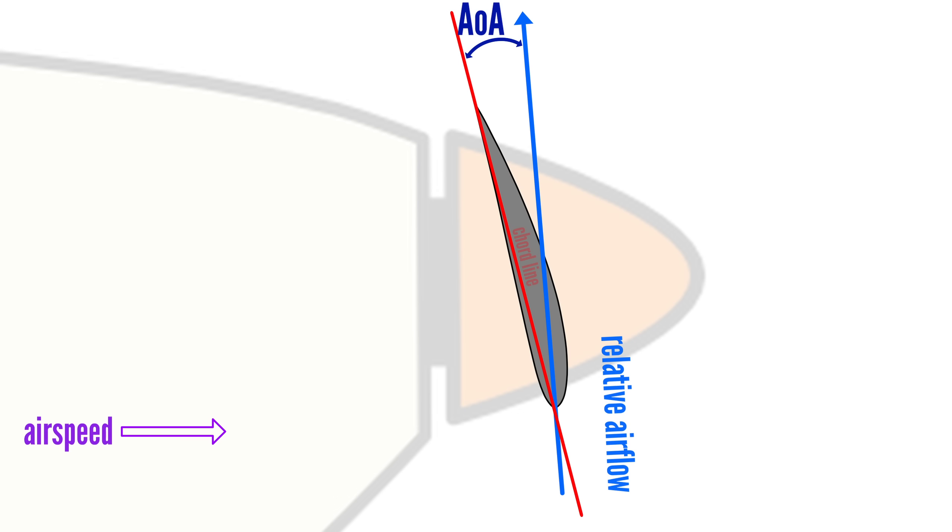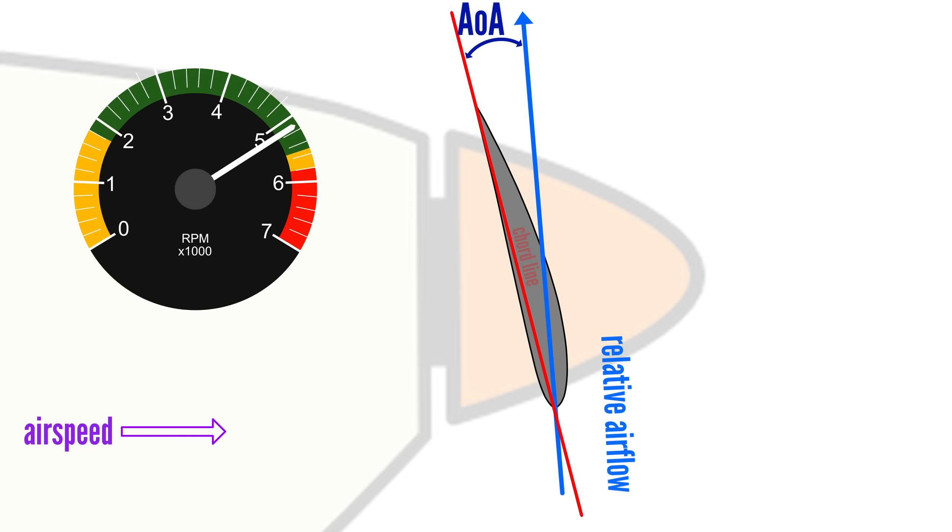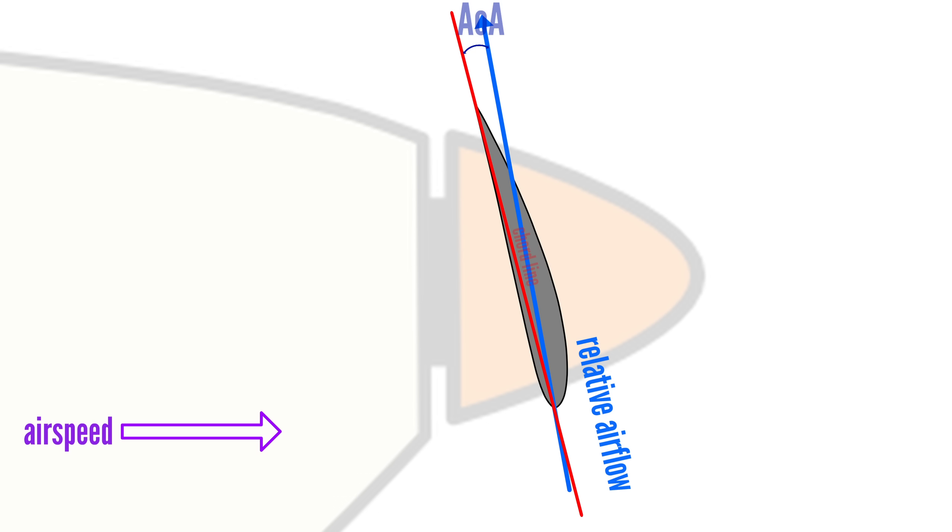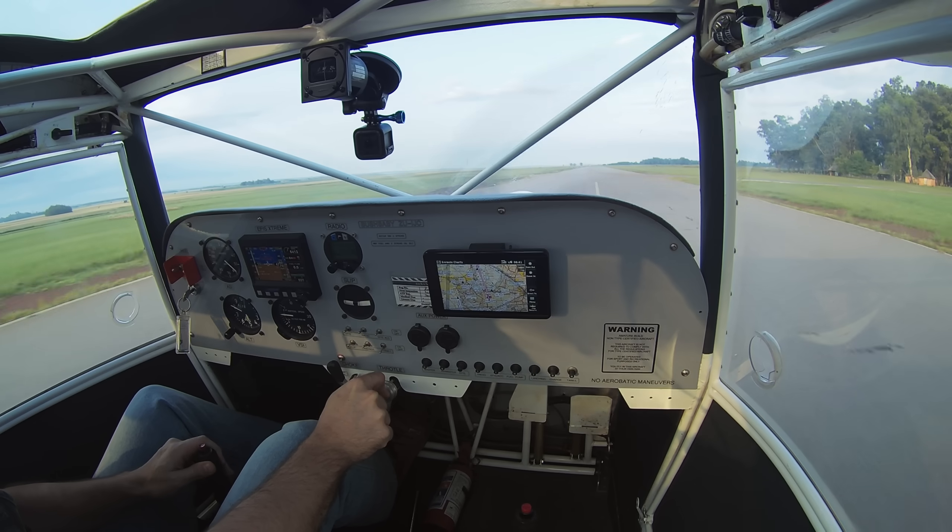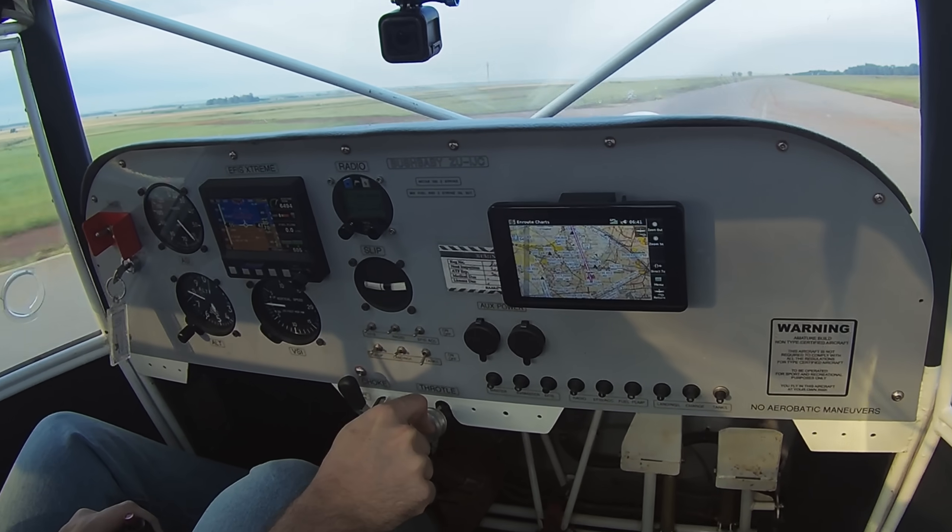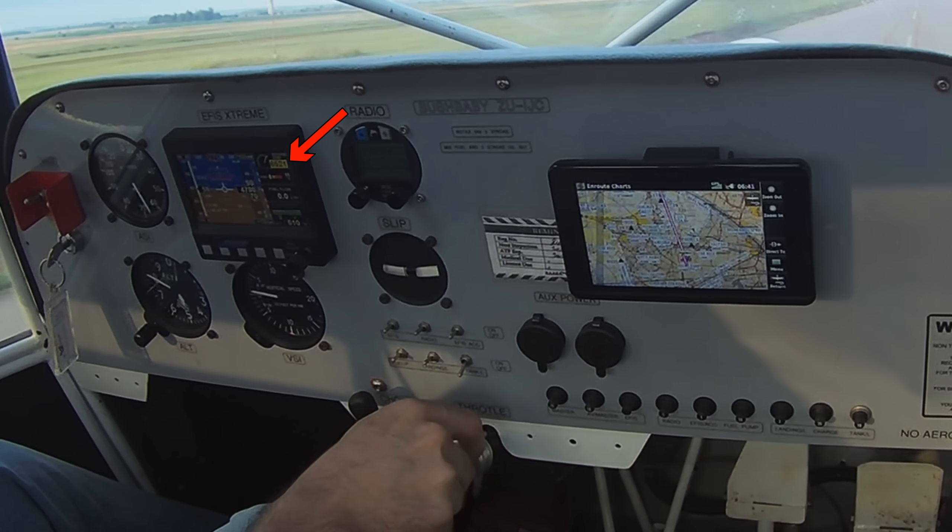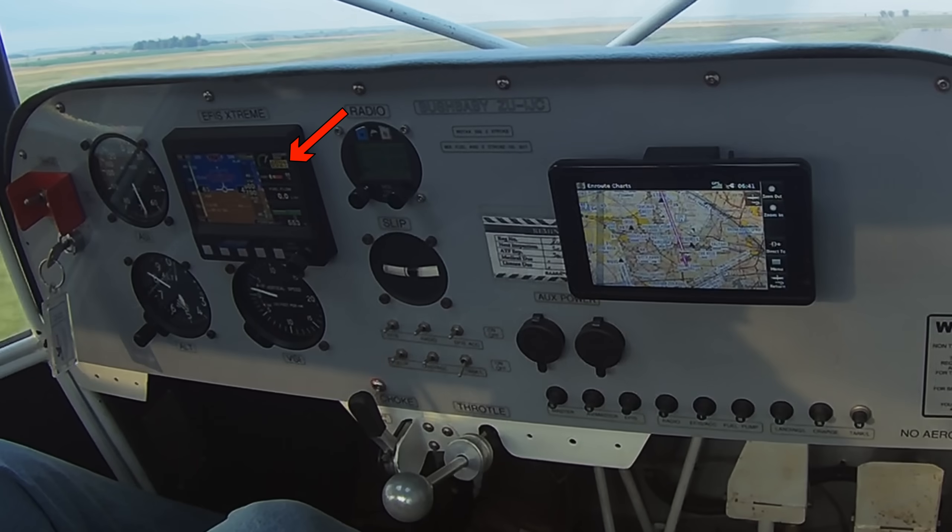A fine pitch propeller provides good takeoff thrust but causes the engine to reach maximum RPM quickly as the airplane accelerates. This is due to the blades getting progressively less loaded as the airplane speeds up due to the decreasing blade angle of attack. To avoid exceeding the engine's maximum RPM, throttling back is often necessary, reducing power and thrust.